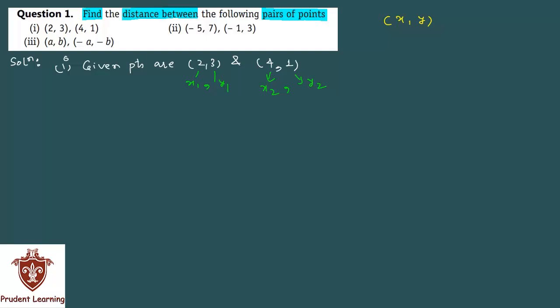Now we know that the distance between any two points is determined by the formula: square root of (x2 minus x1) whole square plus (y2 minus y1) whole square. You need to substitute the values.